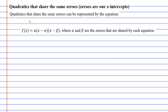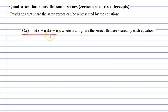We have a special equation which we use here, and for a lot of people this can be very confusing. What makes it confusing is there are a lot of different pronumerals: a, x, alpha, and beta — four different pronumerals. To help you understand what's going on, let's take a function that actually has numbers in it.